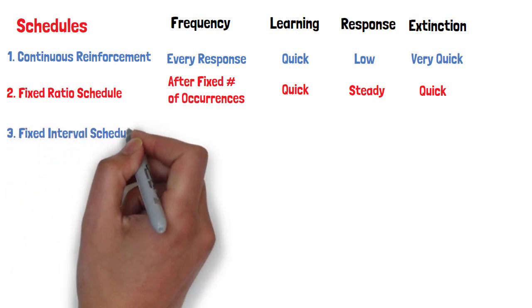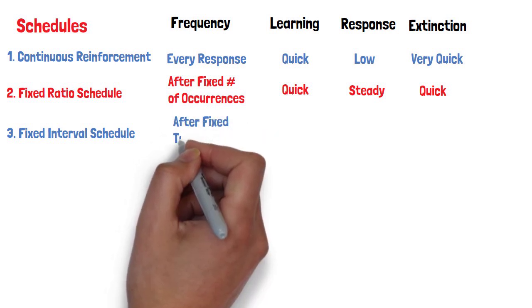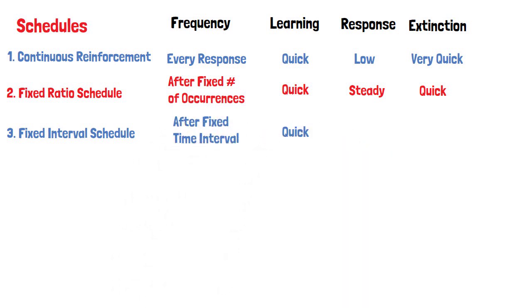Fixed interval schedules are another form of partial reinforcement. Reinforcement occurs only after a certain interval of time has elapsed. Response rates remain fairly steady and start to increase as reinforcement time draws near, but slows immediately after the reinforcement has been delivered.